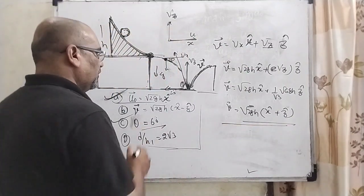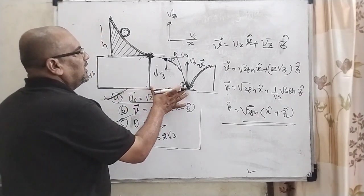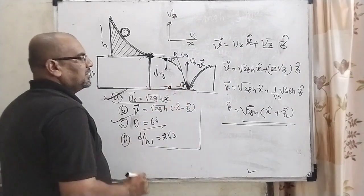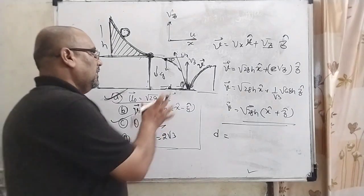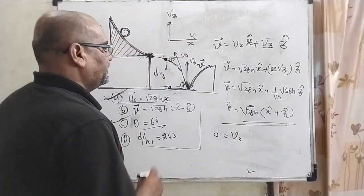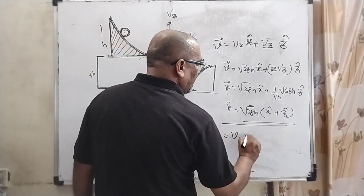Let's proceed further. The distance d, which is the range, can be found using the x component of velocity and the time of flight.